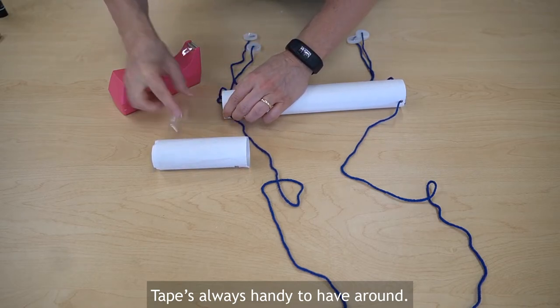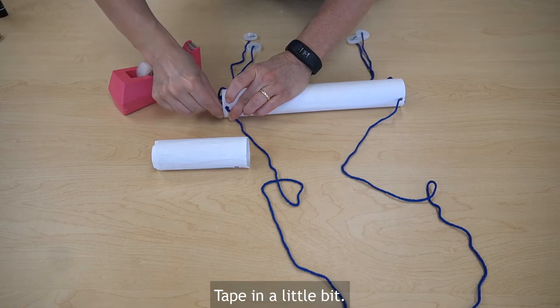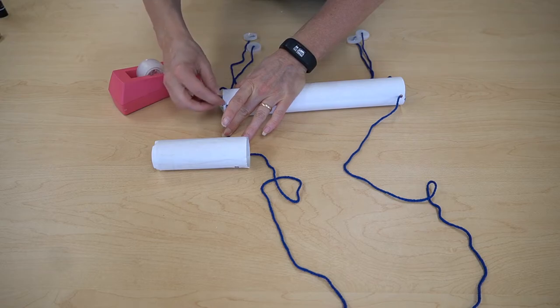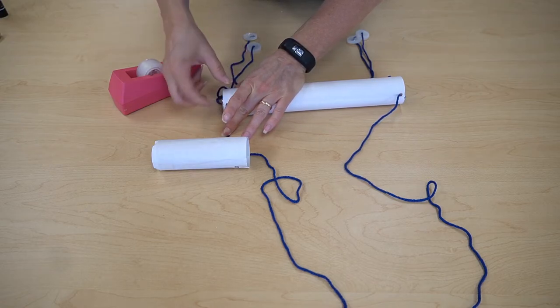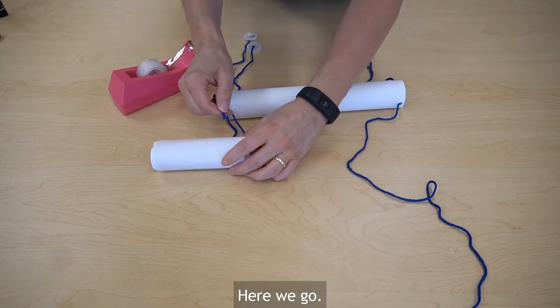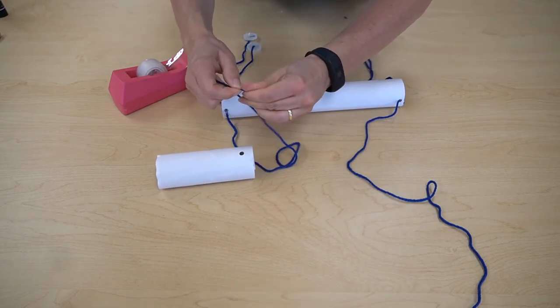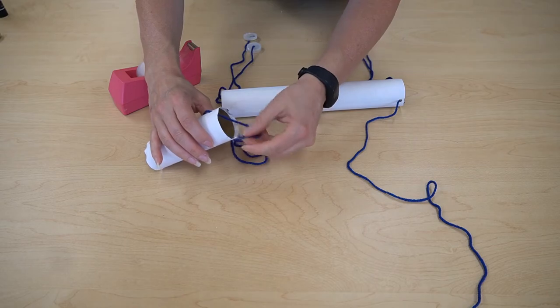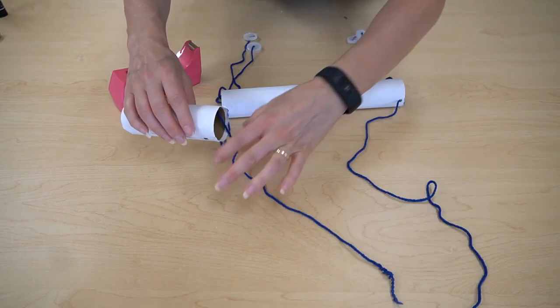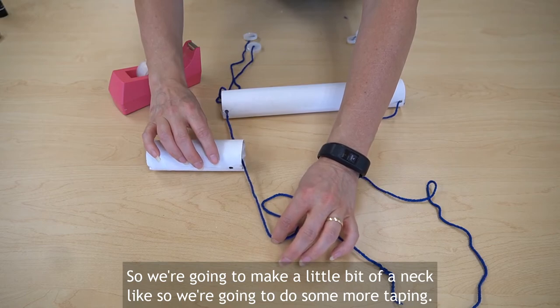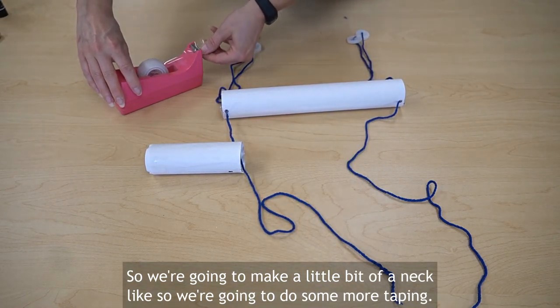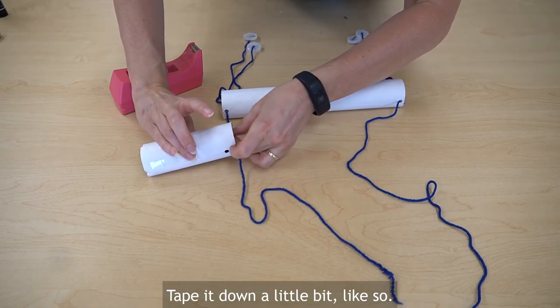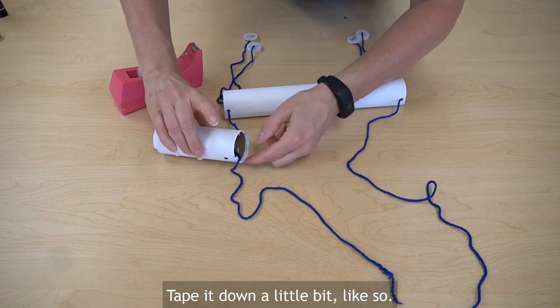Tape is always handy to have around. Tape it a little bit. And here we go. So we're going to make a little bit of a neck like so. And we're going to do some more taping. Tape it down a little bit. Like so.